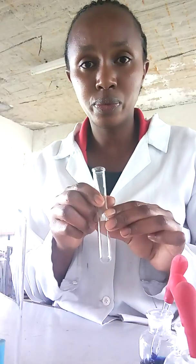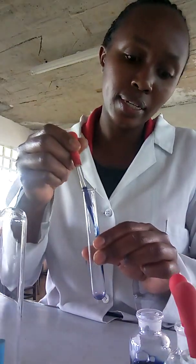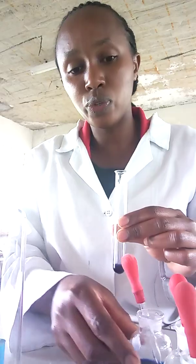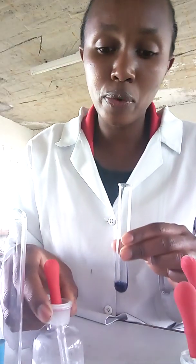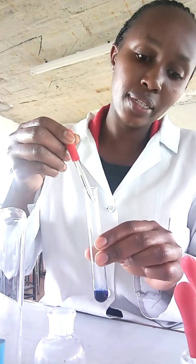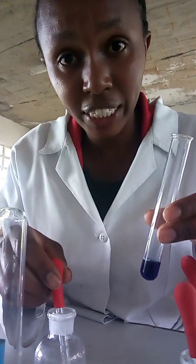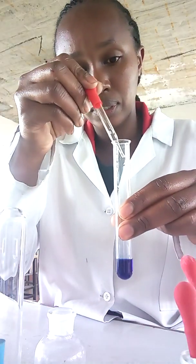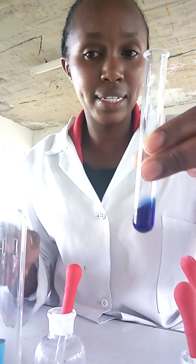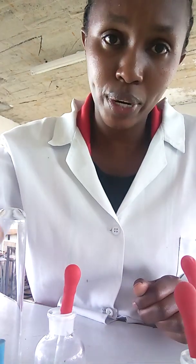For the first experiment, I'll take one test tube and put the DCPIP in first — that is the solution used to test — and then I'm going to take solution B and place it into the test tube. You can see the blue color is not changing, so this blue color is retained.